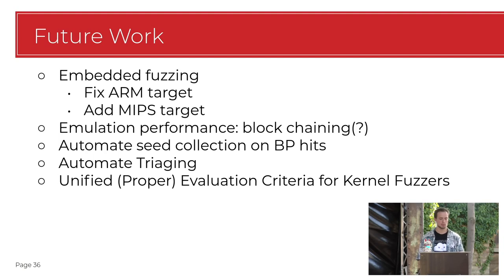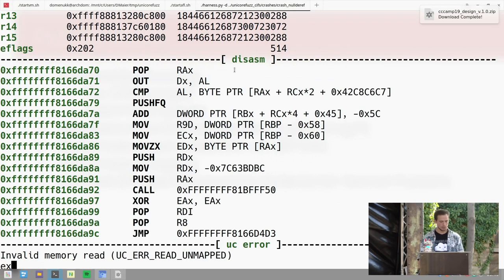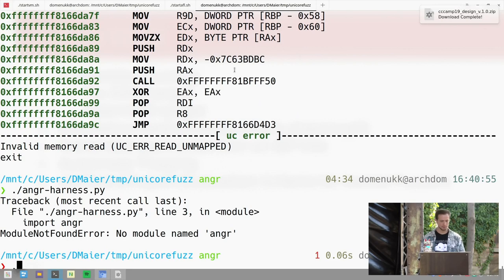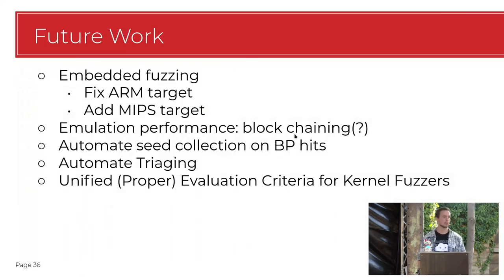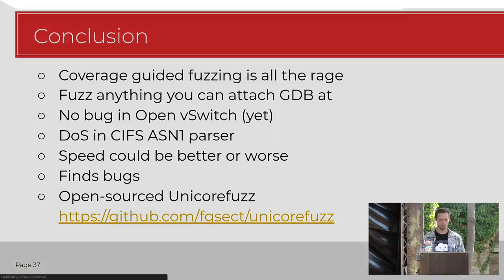Future work includes ARM target, MIPS target, and so on. I'm also working on symbolic execution integration to find more paths. It finds bugs - we did find a denial of service and some kernel issues. Speed could be better, could be worse. It's now open source - you can download it, run it, and try to find your own kernel bugs.